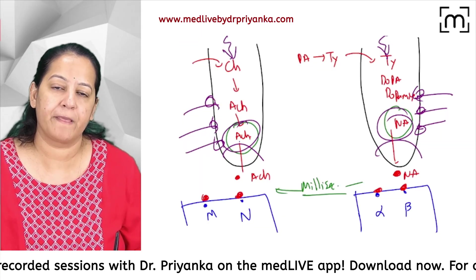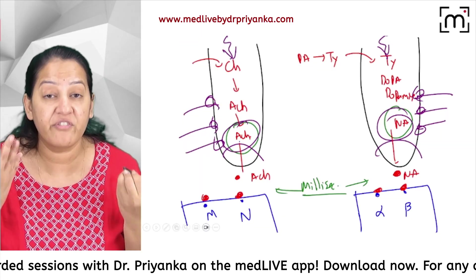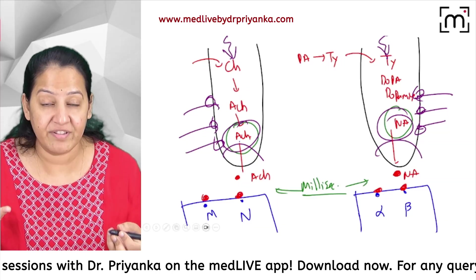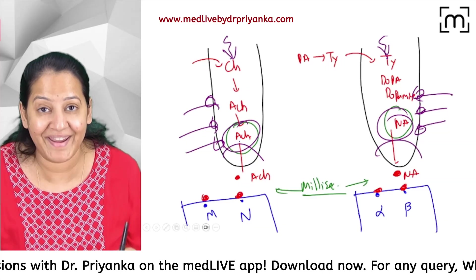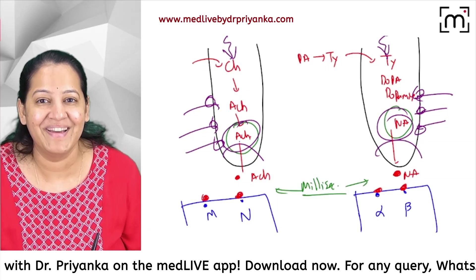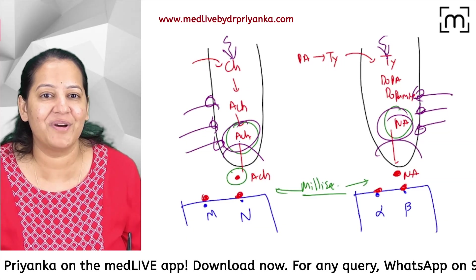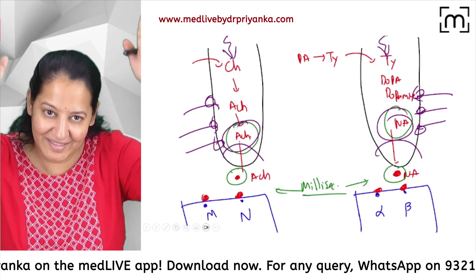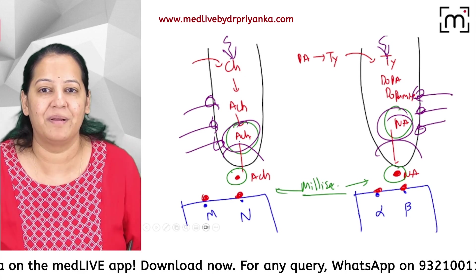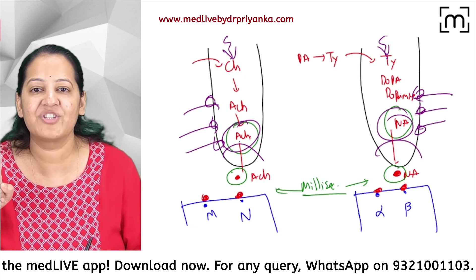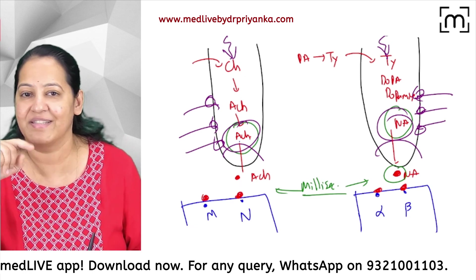After that millisecond, we have to destroy the neurotransmitter so that a new impulse can come. So how does destruction occur? Let's look at acetylcholine first.